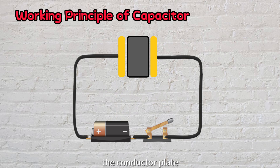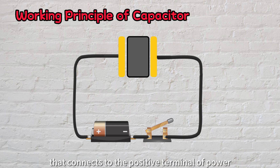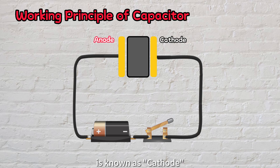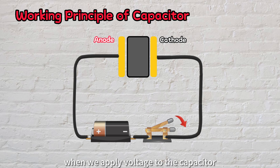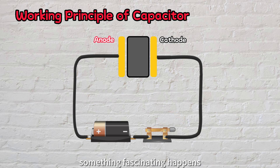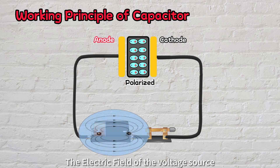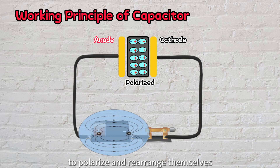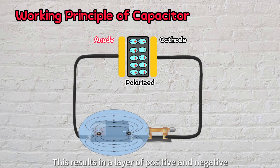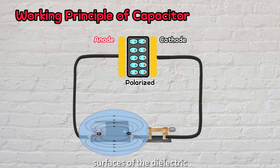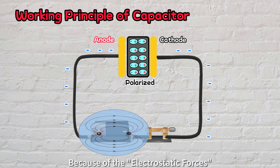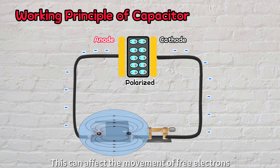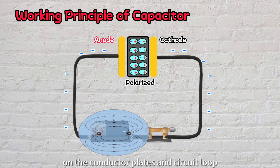In a DC circuit, the conductor plate that connects to the positive terminal of the power source is known as anode, and the one connected to the negative terminal is known as cathode. When we apply voltage to the capacitor, something fascinating happens. The electric field of the voltage source causes the atoms in the dielectric material to polarize and rearrange themselves. This results in a layer of positive and negative charges on opposite surfaces of the dielectric. Because of the electrostatic forces, where like charges repel and opposite charges attract each other, this can affect the movement of free electrons on the conductor plates and circuit loop.